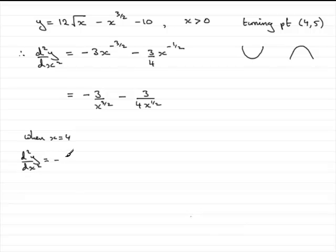And we have -3 then over x to the power 3/2. 4 to the power 3/2 then. For the next term, we have -3 over 4 times 4 to the power 1/2.